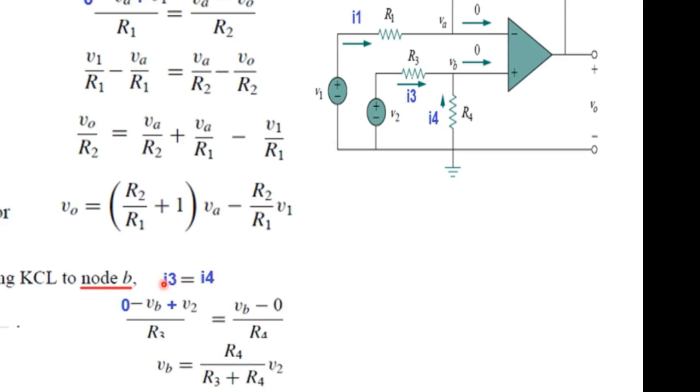At node B also, we have the current entering I3 and current leaving I4. So, I3 equals I4. Again, I3 is 0 minus VB plus V2. So, 0 minus VB plus V2 and this is VB minus 0 divided by R2. So, these two equations by solving we get VB is equal to R4 divided by R3 plus R4 V2.